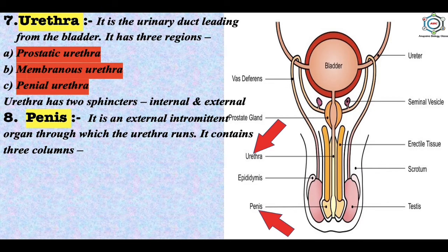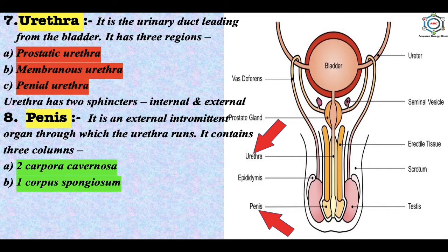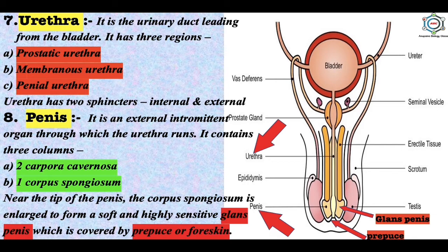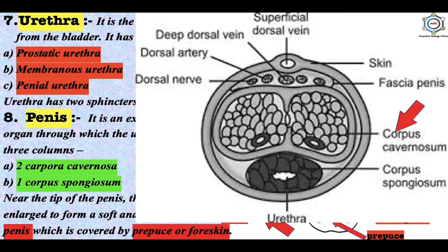The penis is an external intermittent organ through which the urethra runs. It contains three columns: two corpora cavernosa present on the front side, and one corpus spongiosum around the urethra. Near the tip of the penis, the corpus spongiosum is enlarged to form the soft and highly sensitive glans penis, which is covered by the prepuce or foreskin.